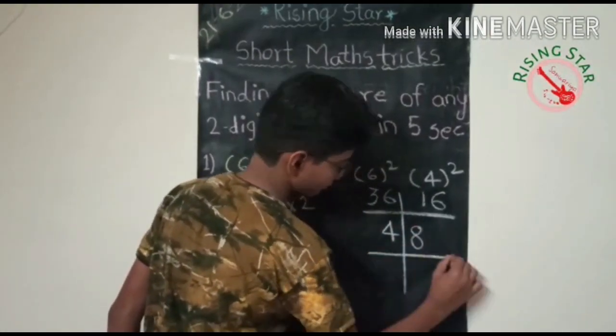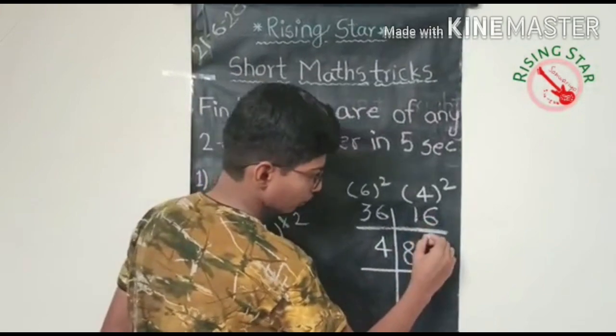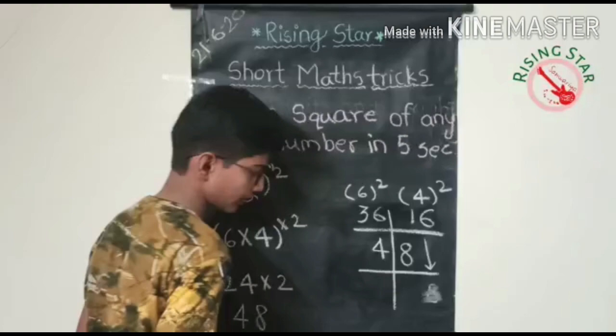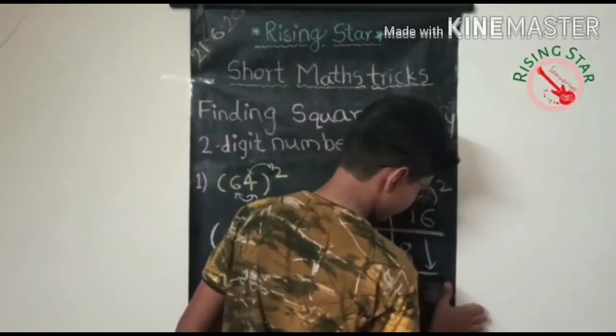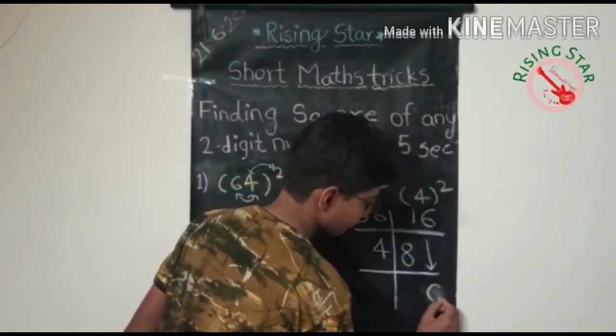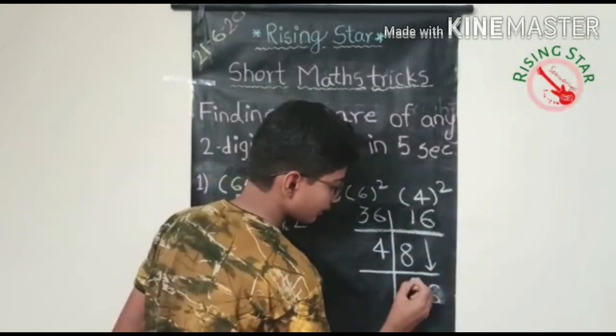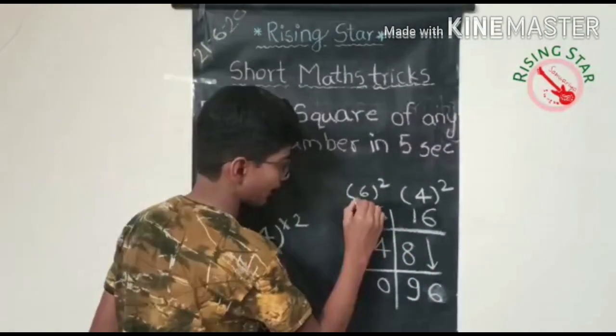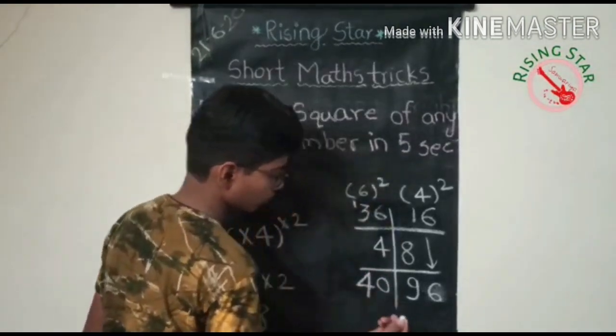And now just add here. Write six as it is. Here write six, here one plus eight is nine, here six plus four is ten with one carry, and here four.